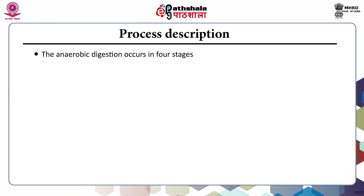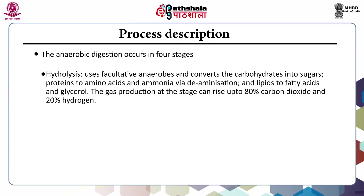In the hydrolysis phase, facultative anaerobes convert carbohydrates into sugars, proteins into amino acids and ammonia via deamination, and lipids into fatty acids and glycerol. The gas production at this stage can rise up to 80% carbon dioxide and 20% hydrogen.